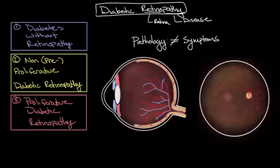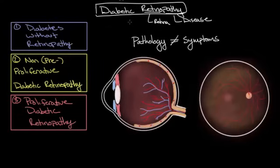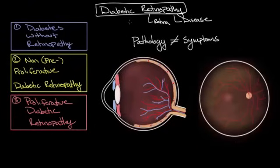Before we dive into the pathology, what are some of the common symptoms of diabetic retinopathy? Since it's a disease of the retina caused by diabetes, the symptoms are typically visual. Most symptoms tend to be fairly mild initially — things like blurry vision or seeing dark spots or floaters. However, sometimes the symptoms can be very serious, such as sudden onset of blindness.